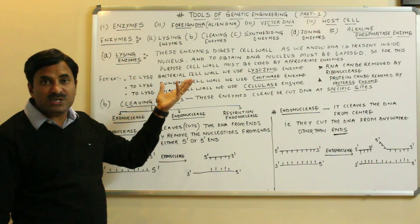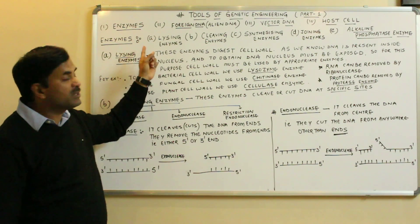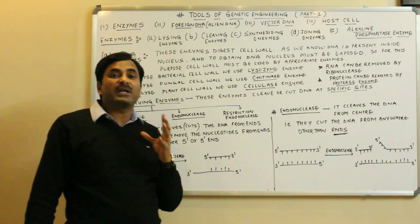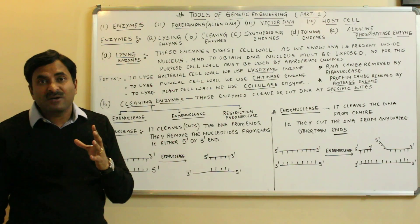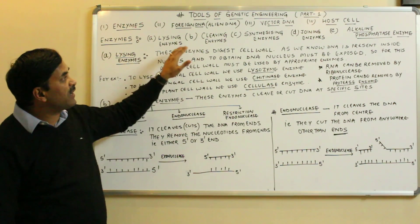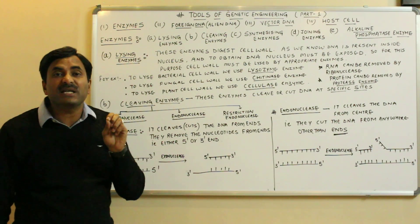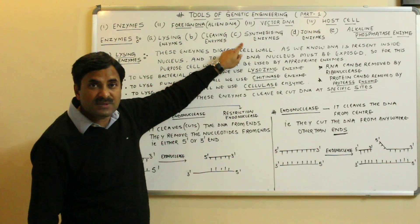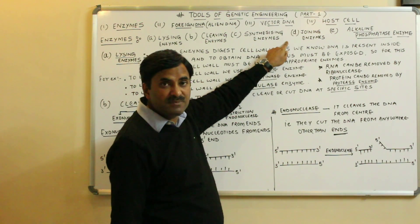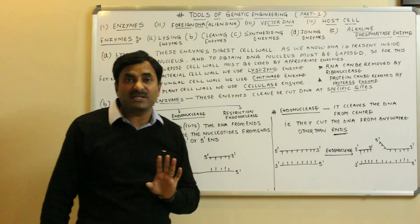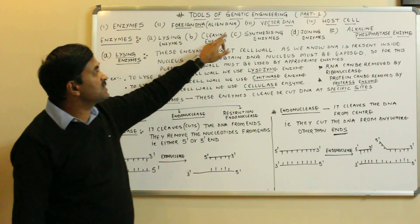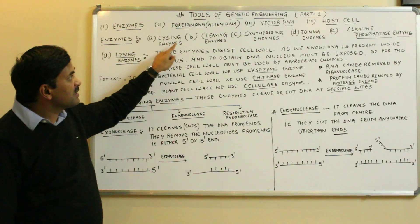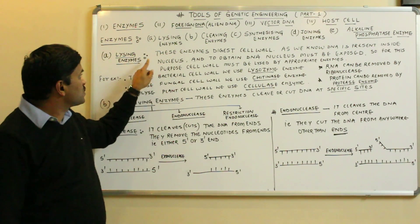In coming videos, we will deal with all these tools. Today we will discuss the first tool — enzymes. Enzymes used in genetic engineering are divided into five categories: lysing enzymes, cleaving enzymes, synthesizing enzymes, joining enzymes, and alkaline phosphatase enzymes. Today we will discuss lysing enzymes and a portion of the cleaving enzymes.